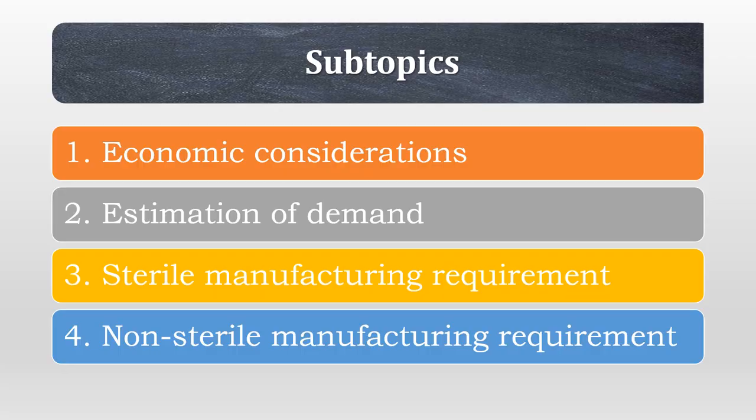The Hospital Manufacturing chapter is subdivided into four different sections: Economic Considerations, Estimation of Demand, and Sterile and Non-Sterile Manufacturing Requirements.